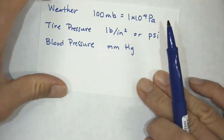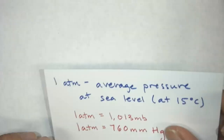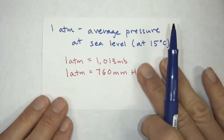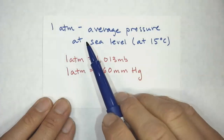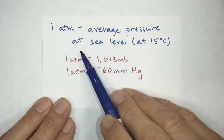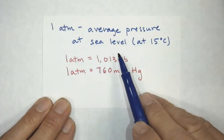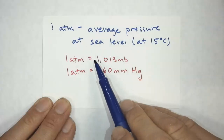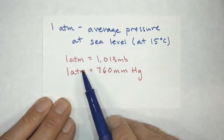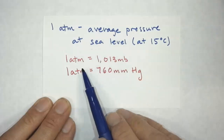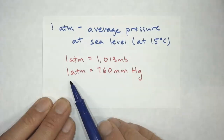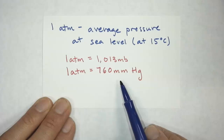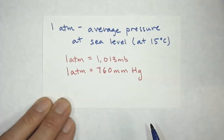Pressure is really important in our lives. One more bit of information before we look at some problems: one atmosphere is the average pressure at sea level. We can convert this — you can see the conversion between one atmosphere to millibars and one atmosphere to millimeters of mercury.